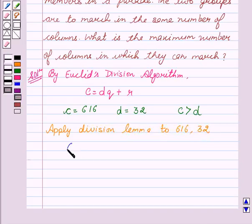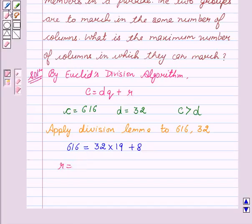This gives us 616 divided by 32. We get 19 as the quotient and 8 as the remainder. Here we see that R equal to 8 which is not equal to 0.